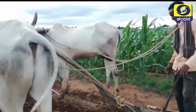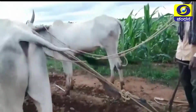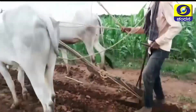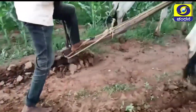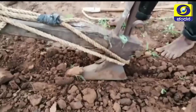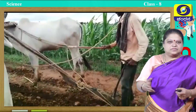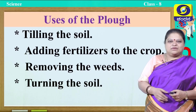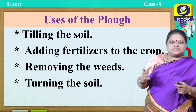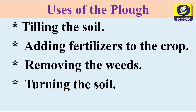You can see the farmer tilling the land using this wooden plow. He is holding the grip. The long wooden-like structure you call it as plow shaft. Sometimes the entire equipment is made up of iron. Uses of the plow: first is tilling the soil, next is adding fertilizers to the crop, removing the weeds, and turning the soil.